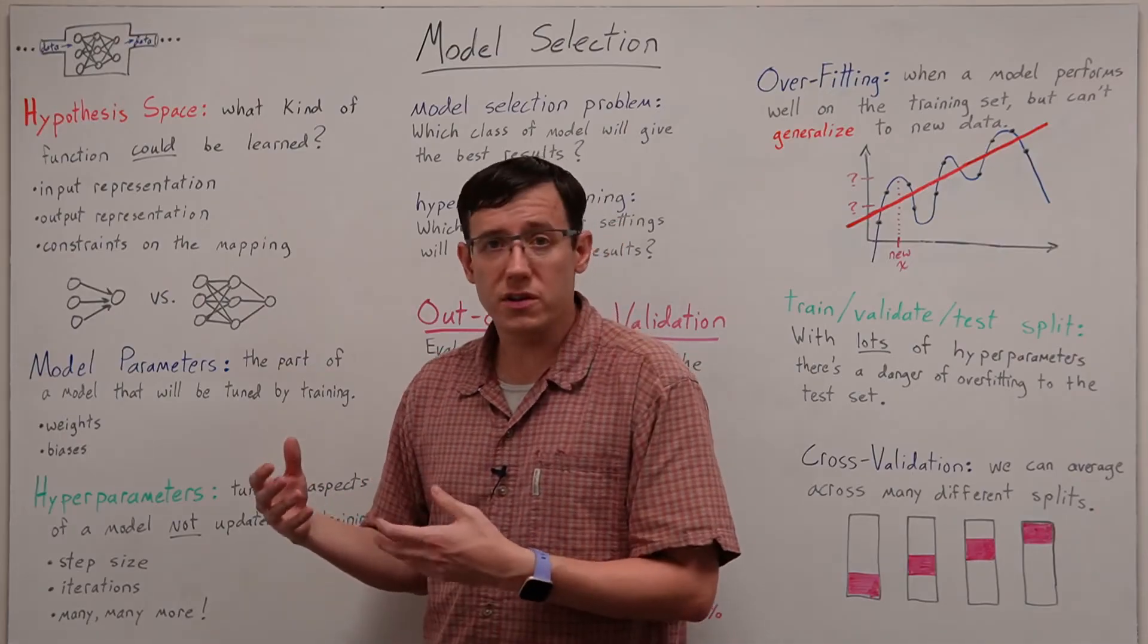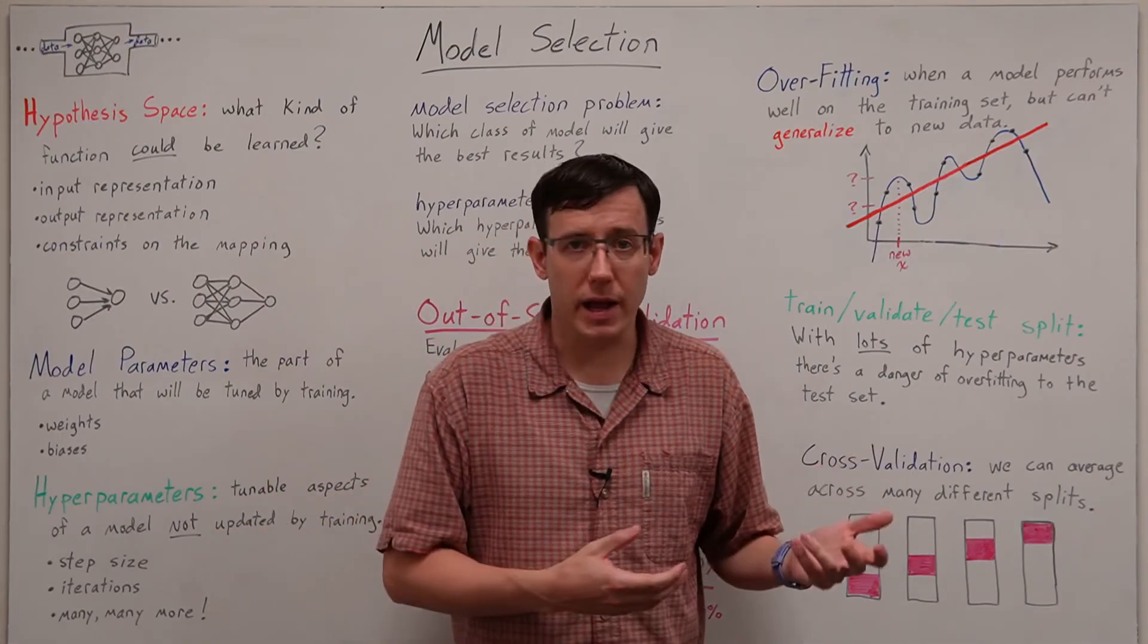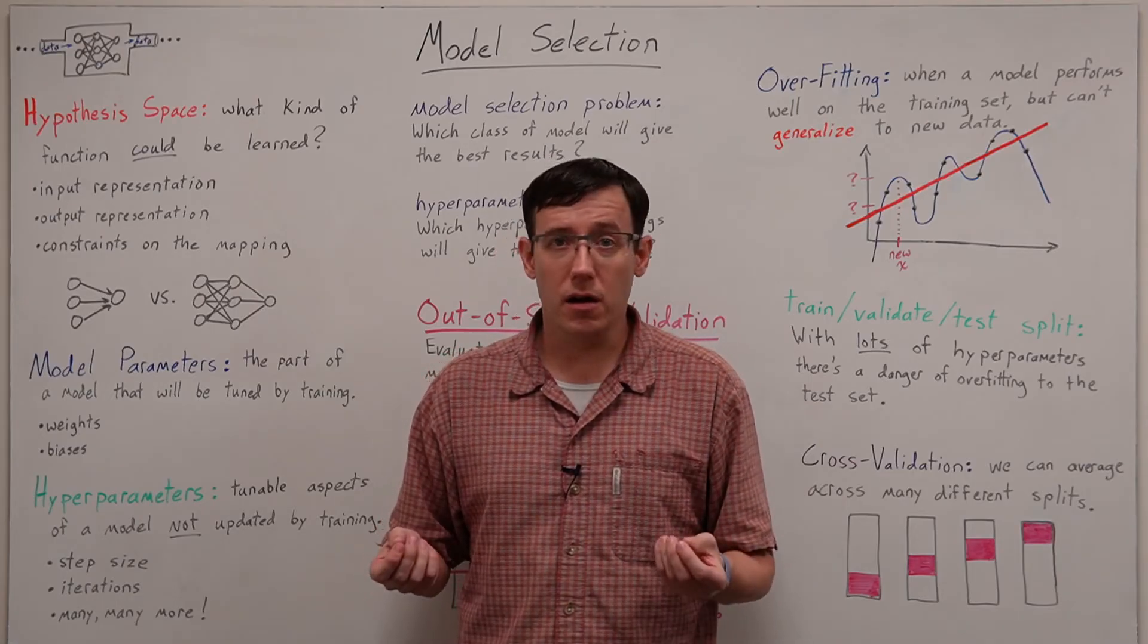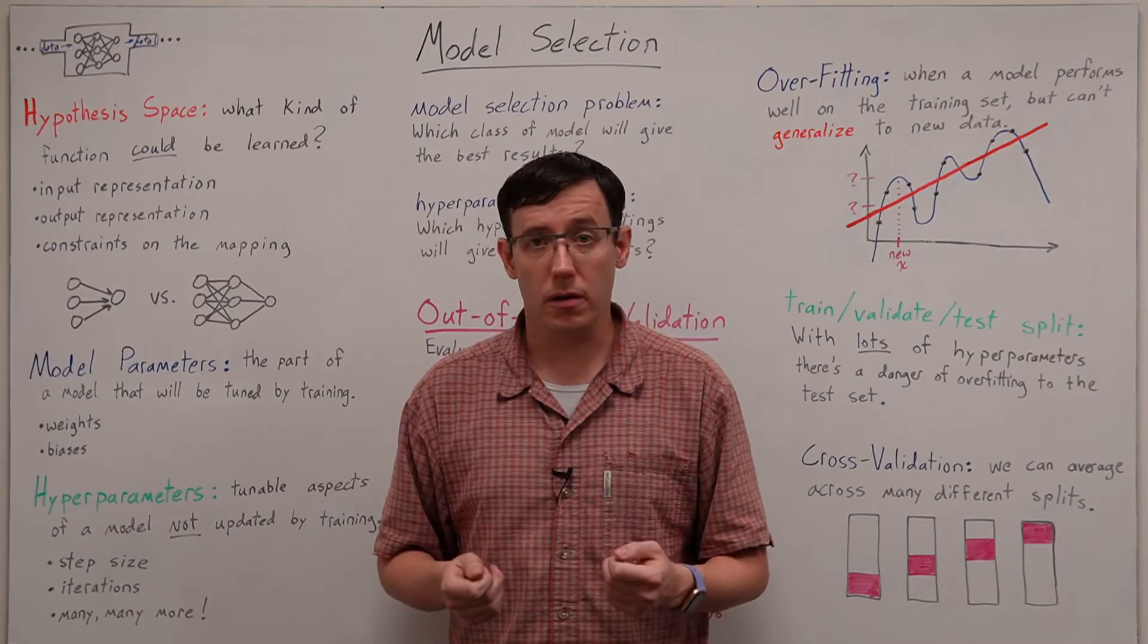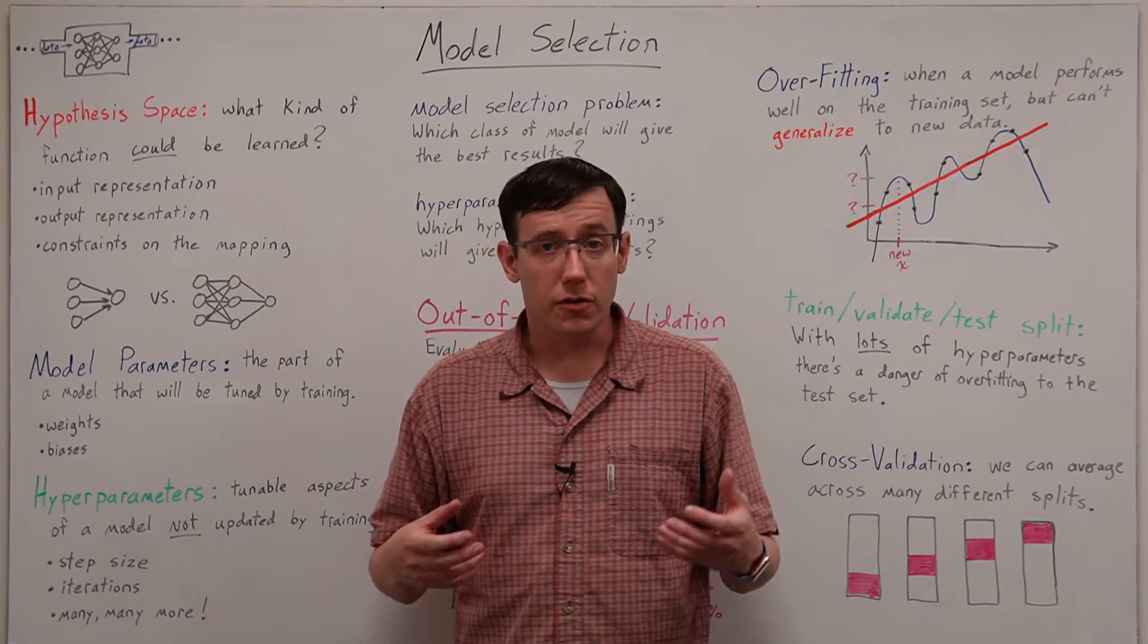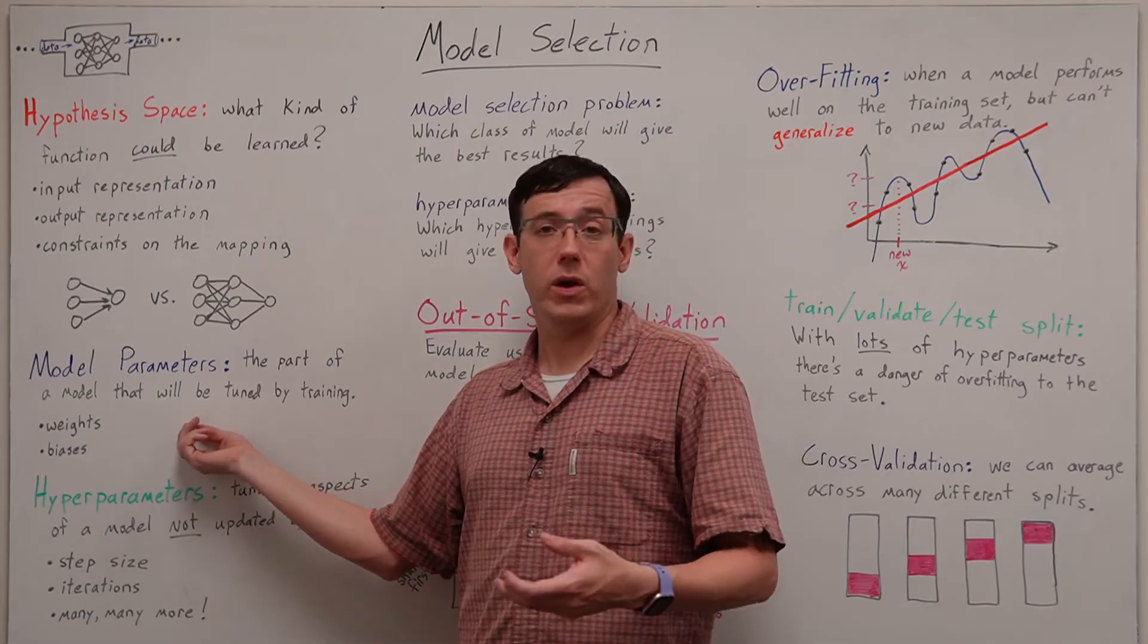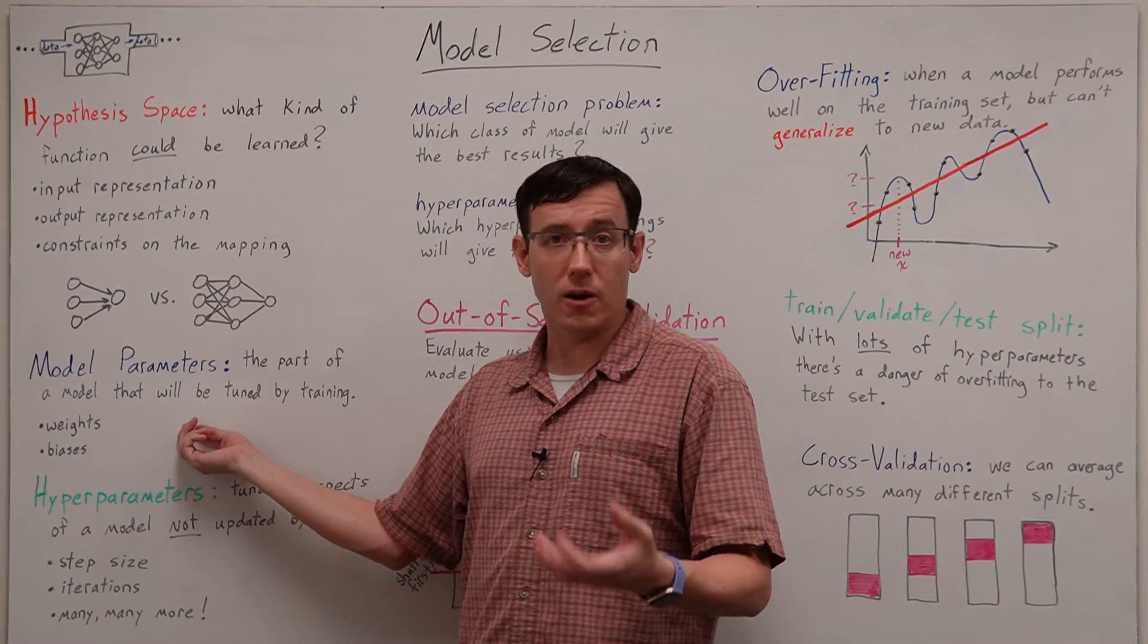But once we've chosen the type of model or the machine learning algorithm that we want to use, there remain a lot of aspects of the model that can be tuned. First of all, whenever we're doing machine learning, we have the parameters of the model that we will train using our data set.